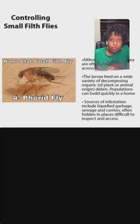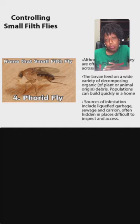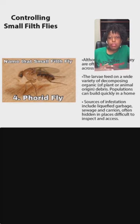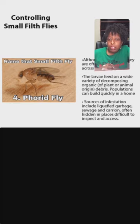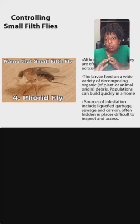They're not picky — if something is decaying and breaking down, they're going to show up in large numbers. If you do not get their population under control, they will quickly get out of control. A fly can lay eggs and you can have a new fly within a week depending on the temperature. If it's in the 80s and 90s, development is very fast, and if you don't get this population under control, they will take over.